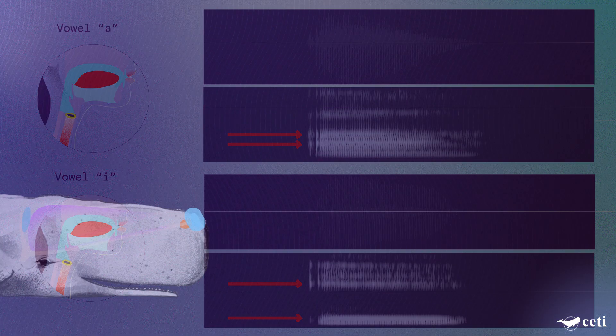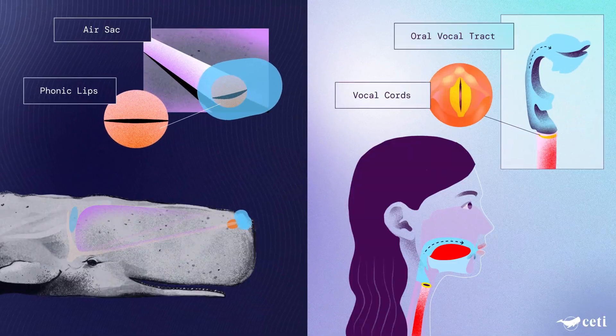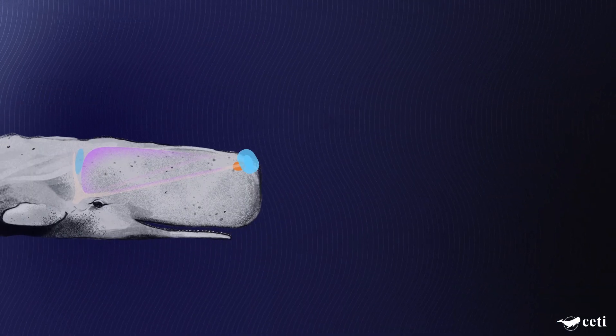So let's look at the whales. Just as humans have vocal cords, whales have phonic lips. Just as we have mouths, they have an air sac which they change the shape of. But still, they click.